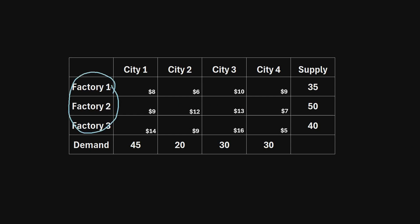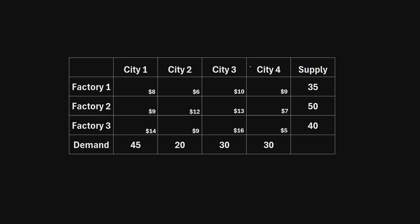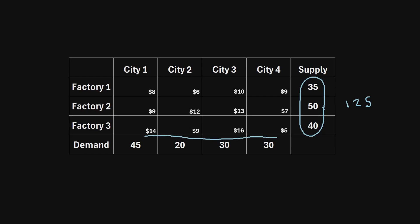We have three factories that produce some good and four cities that have a demand for that good. Factory one has a total supply of 35 units, and city one has a demand of 45 units. The total supply of all factories is 35 plus 50 plus 40, which equals 125. The total demand is 45 plus 20 plus 30 plus 30, which also equals 125. So this is a balanced problem — total supply equals total demand.